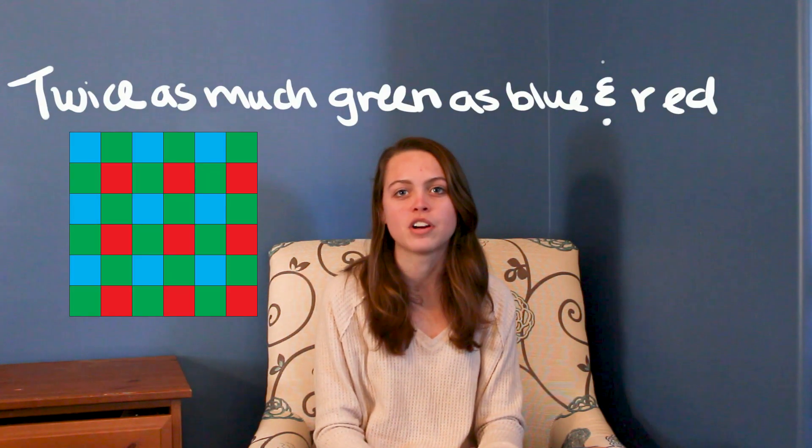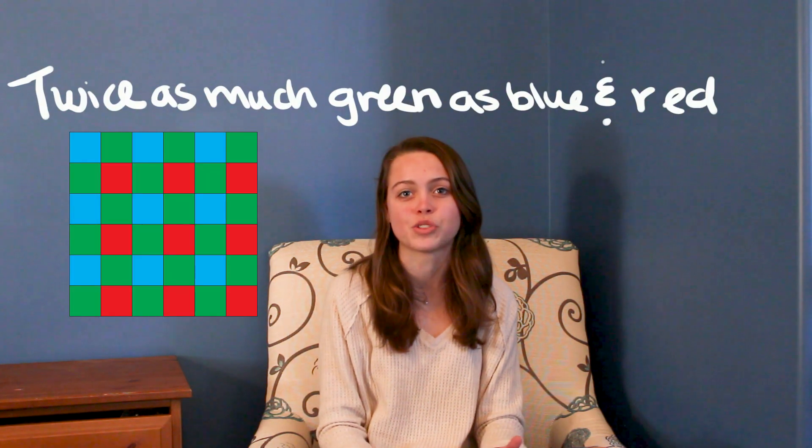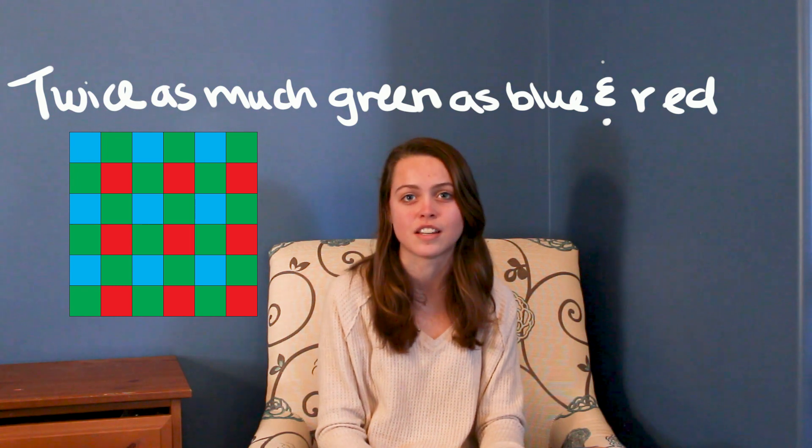In a Bayer array, a filter of one of the three primary colors is placed over a photo site. A photo site with a red filter will only take in red photons, a green filter will only take in green photons, and a blue filter will only take in blue photons. In the pattern, a majority of it is green, and this is because our eyes are most sensitive to the color green. If they used an equal amount of red, blue, and green filters, it'd look a little like this.